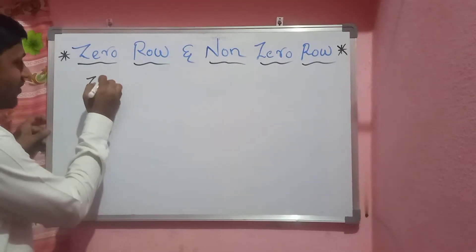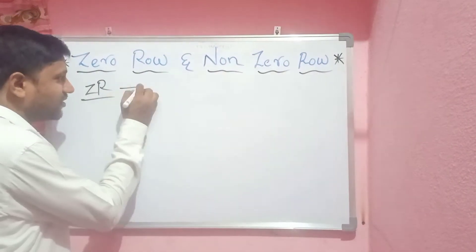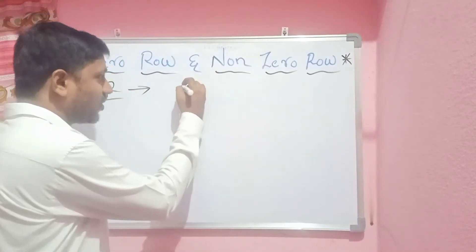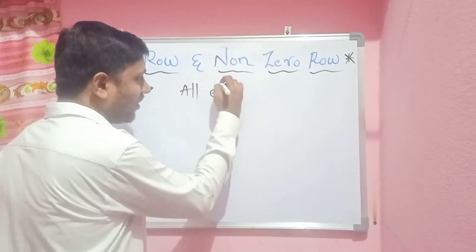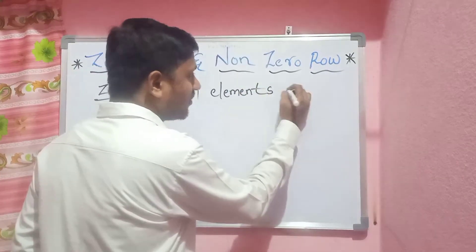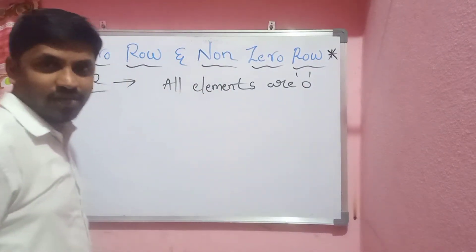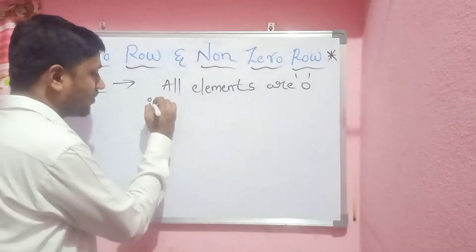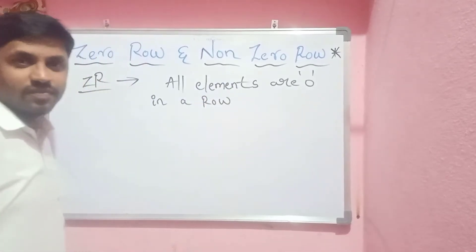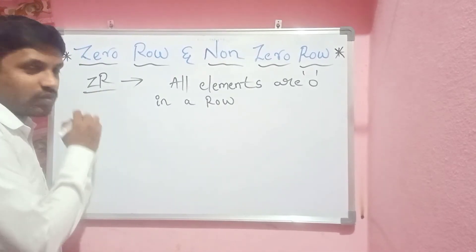So first, we are going to discuss about zero-row. So when is it zero-row? If all the elements are zeroes in a row, it is called a zero-row.